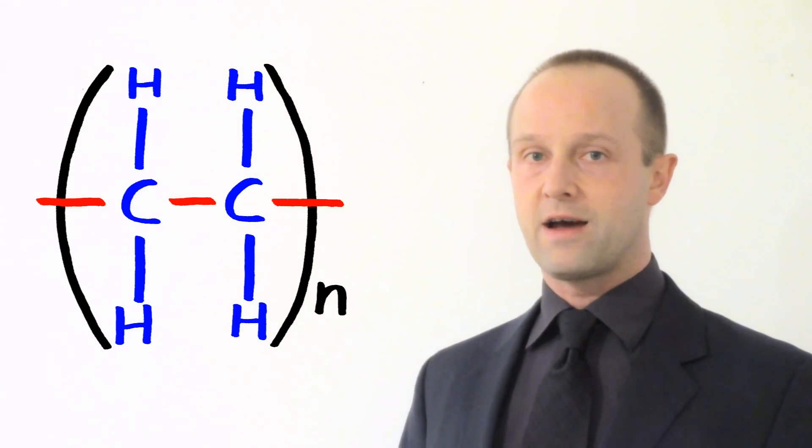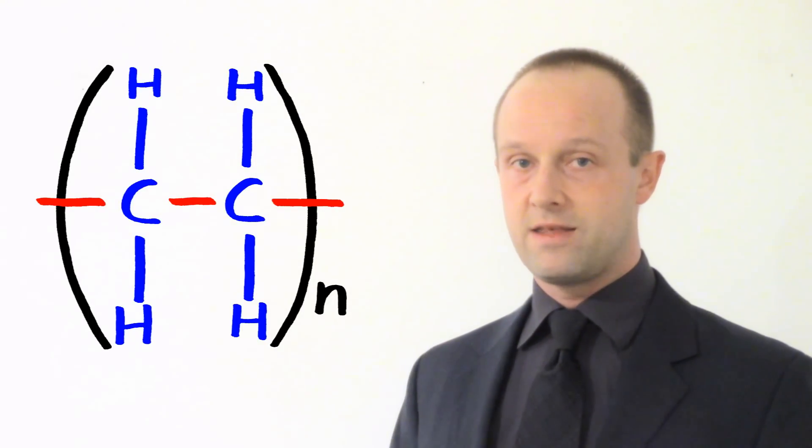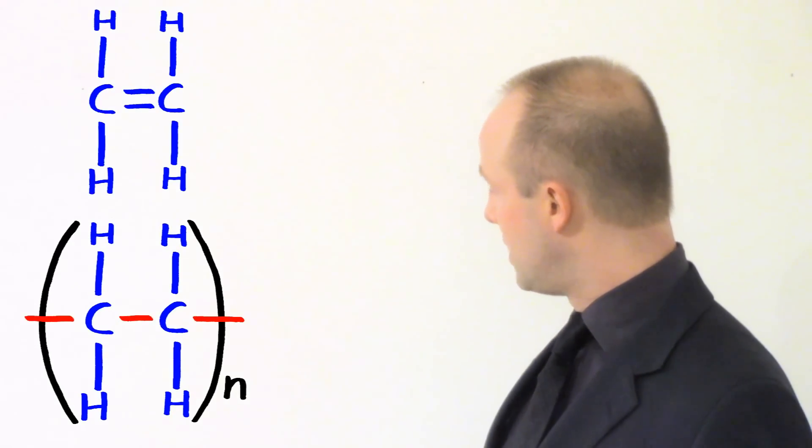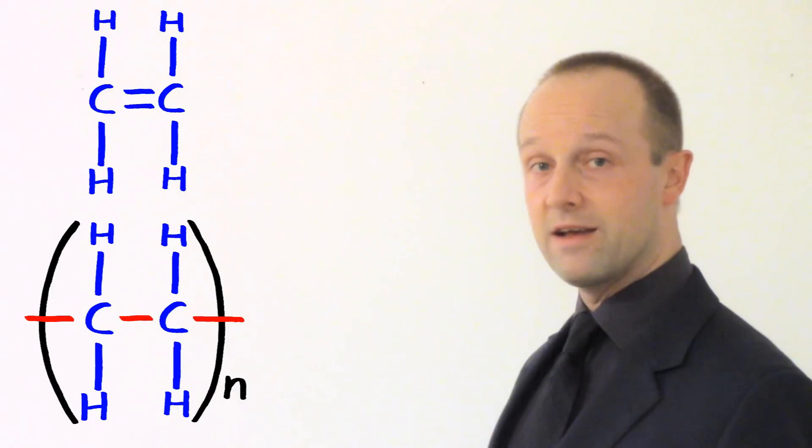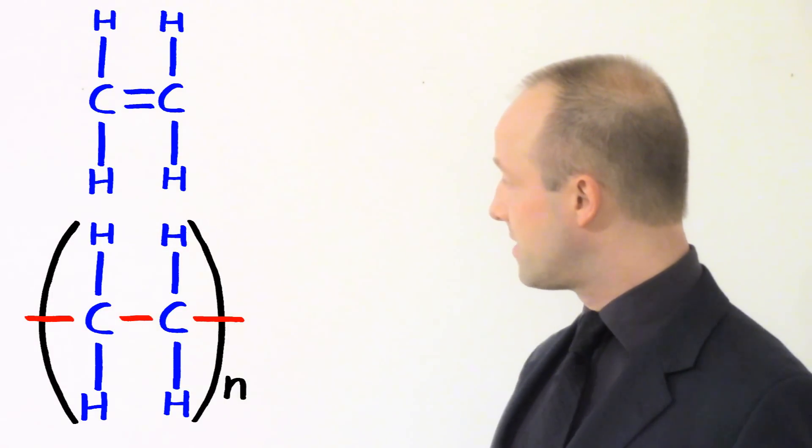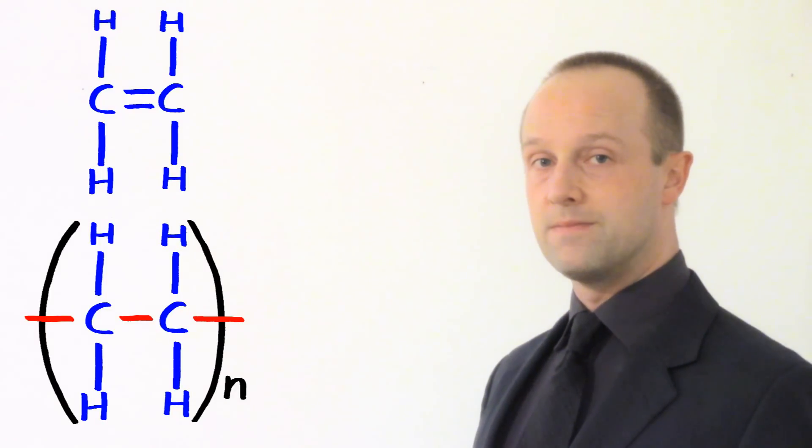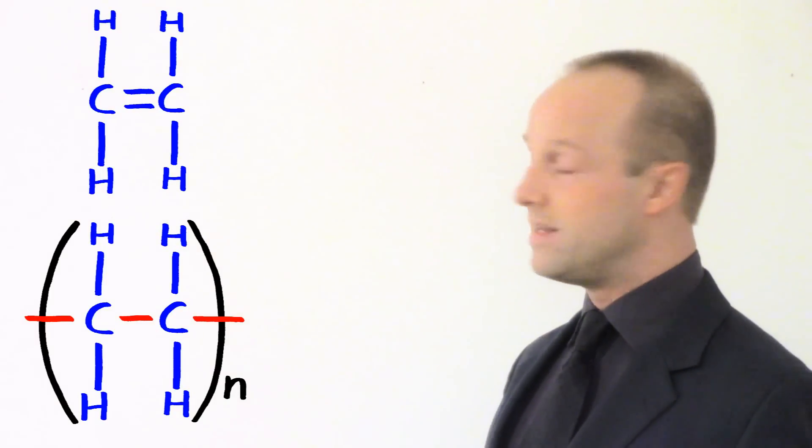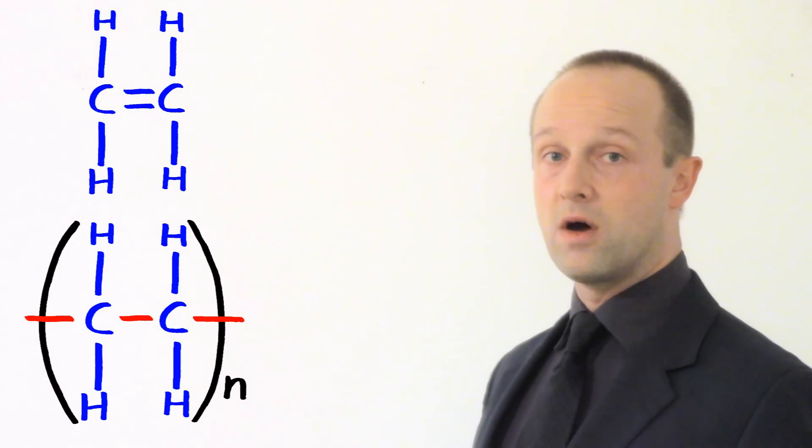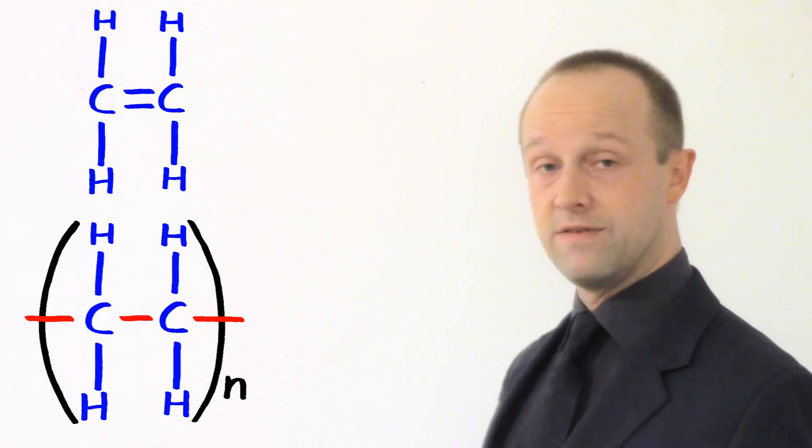Let's just compare that again to our individual ethene monomer. So, there's the ethene monomer. And there is the link in the polyethene polymer. And you can see that basically, it's the same structure. The only difference is instead of the double bond between the two carbons, instead, we've got a bond going out of each of these brackets.